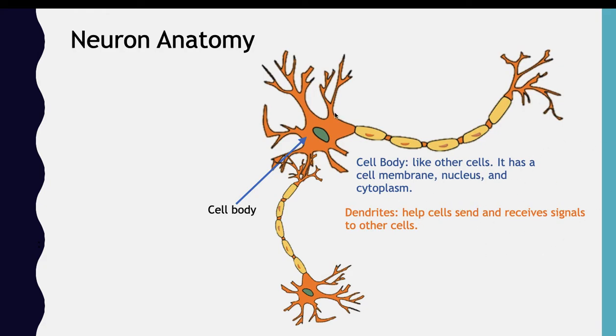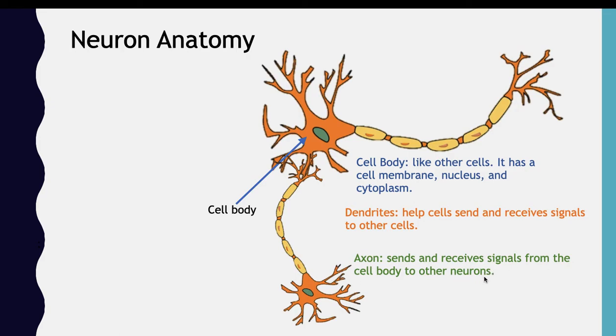The place where the cell body merges with the axon is called the axon hillock, and the end of the axon is called the axon terminal. The axon sends signals from the cell body to other neurons.